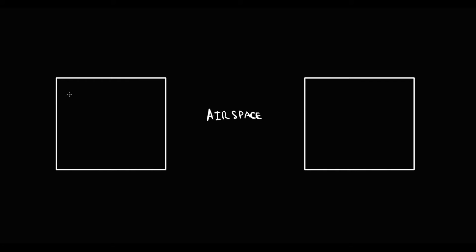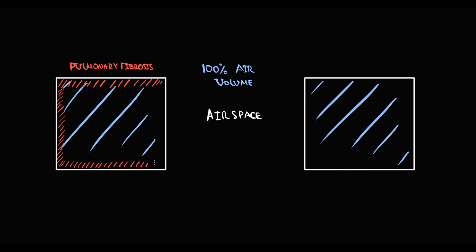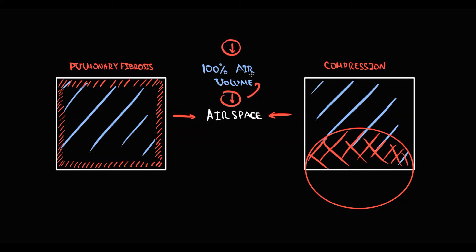Think of it this way: 100% of space is where lungs can store air in normal conditions. So in normal conditions, 100% of air space is filled with air. But in pathology, the air space can decrease. For example, it can be excessive deposition of fibrous tissue in pulmonary fibrosis, or it can be an external factor such as compression by a tumor or by enlarged lymph nodes. In all these cases the air space decreases, and with a decrease in space, the volume of air that can be stored also decreases.